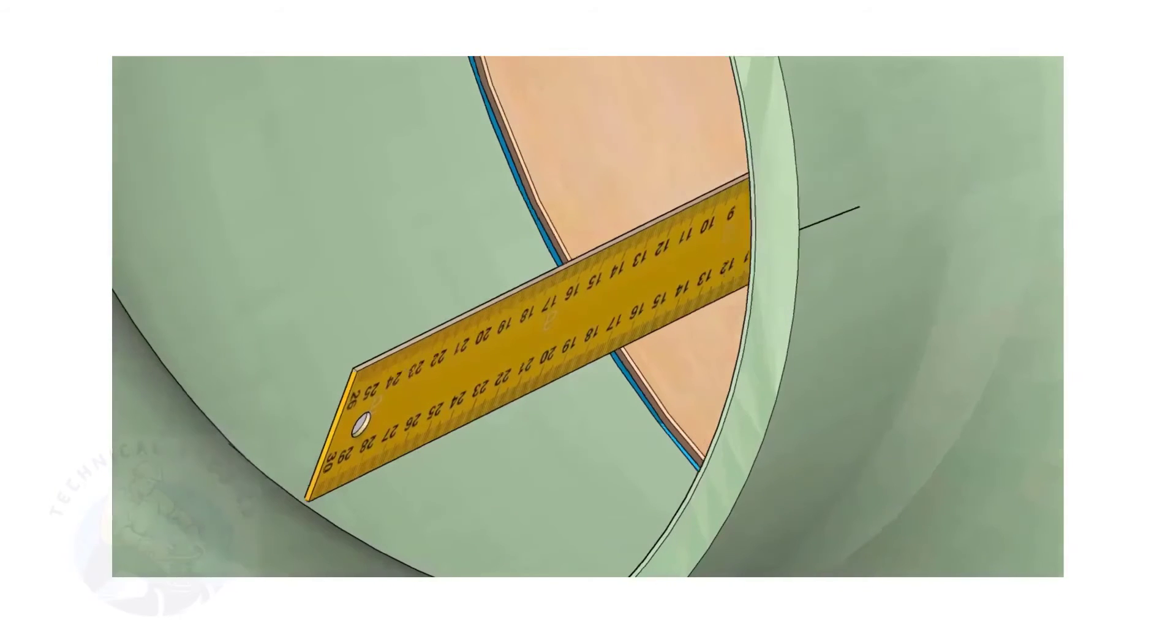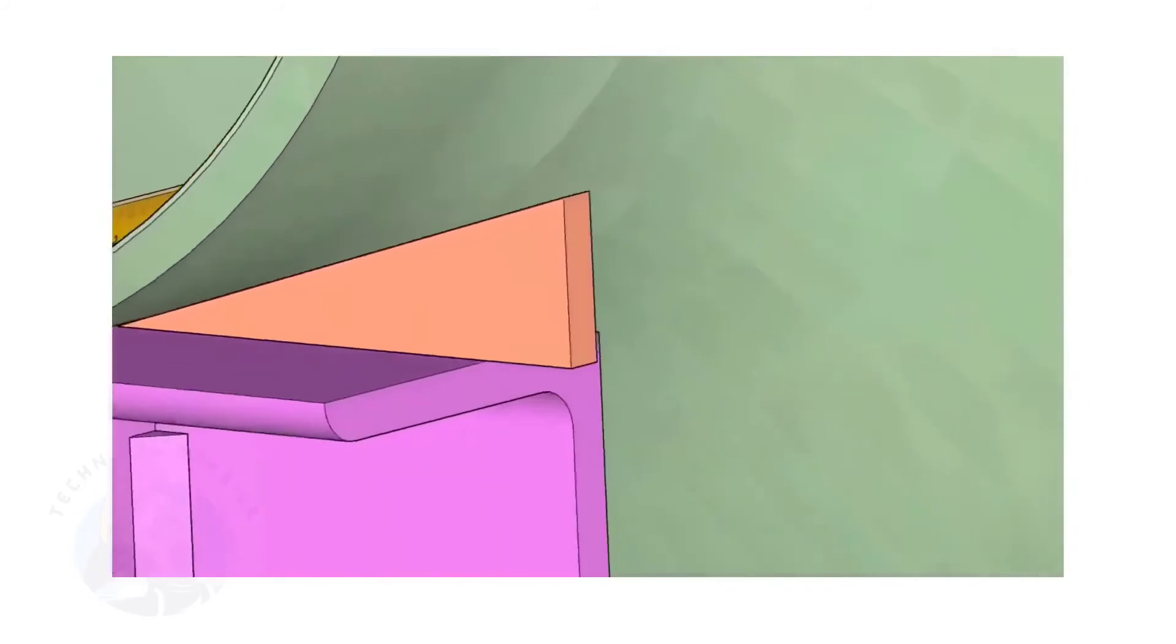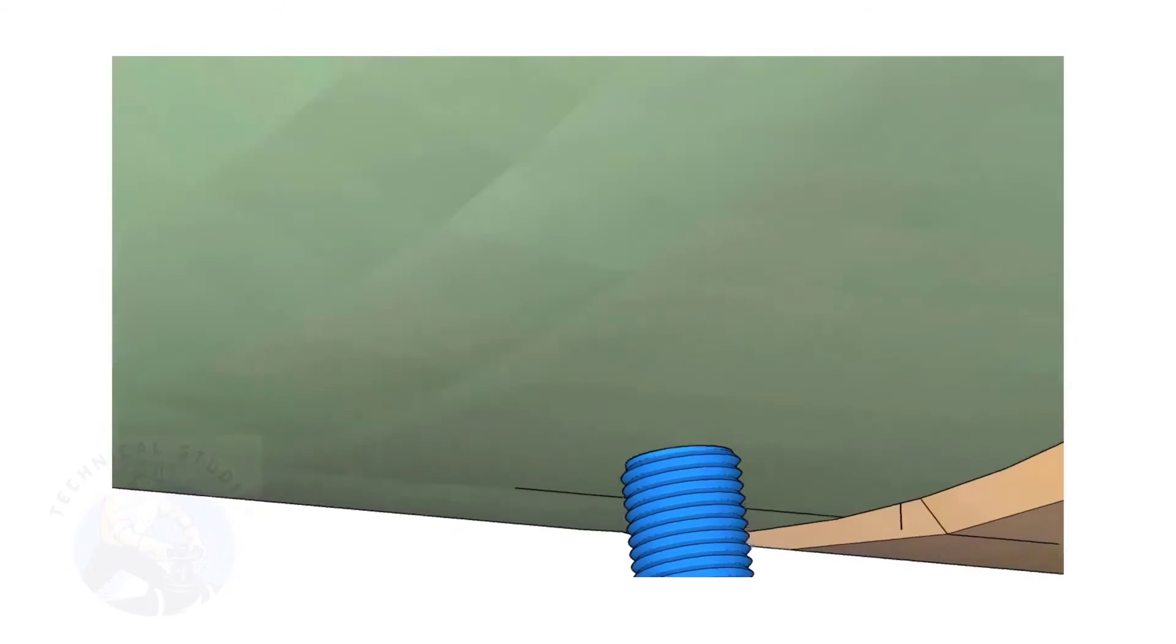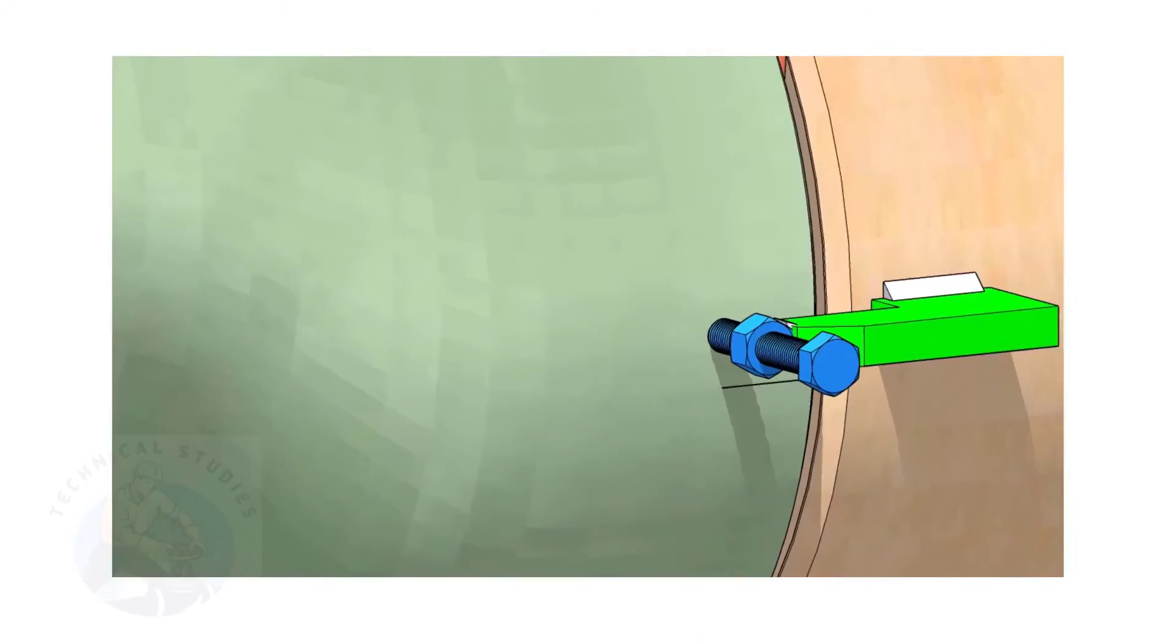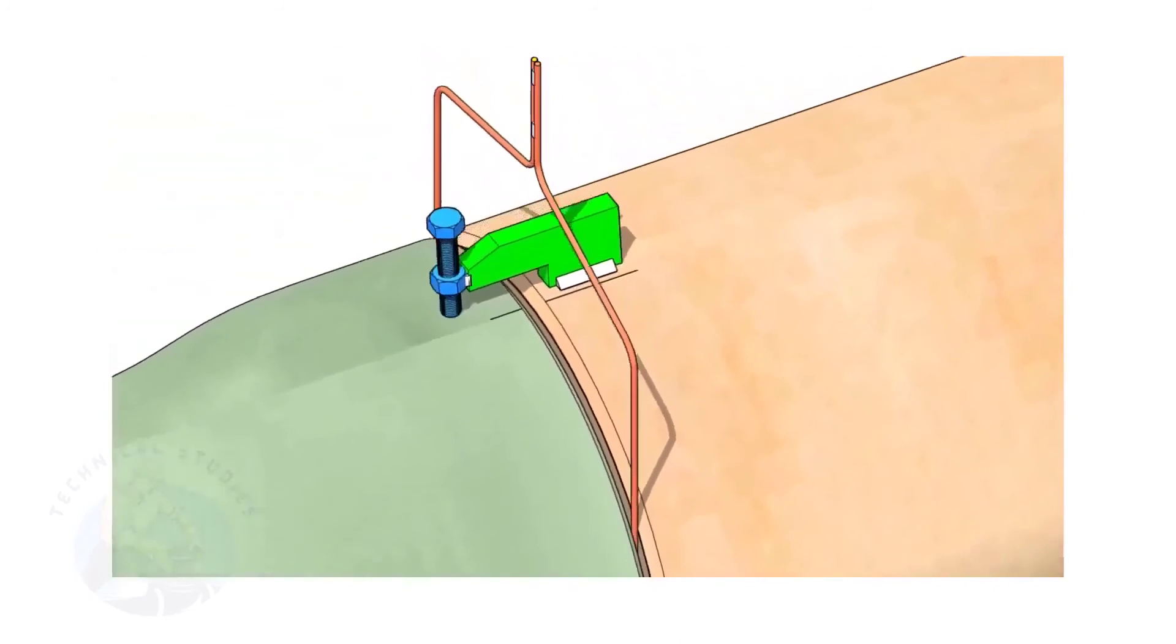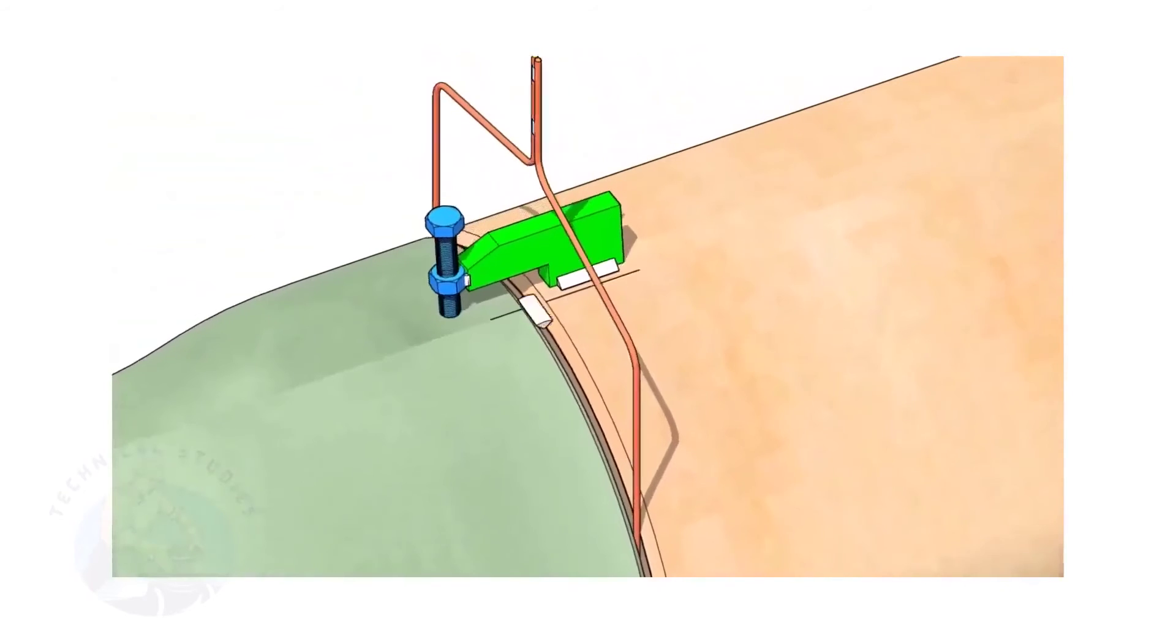By adjusting the jack bolts, correct the overlap of the joint inside the pipe. Now, tack weld on the top side of the joint.